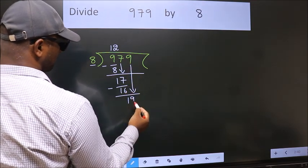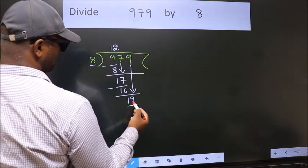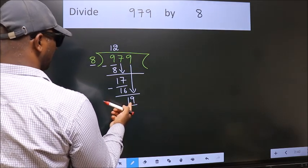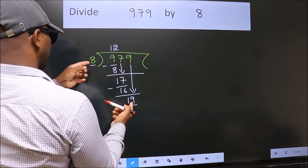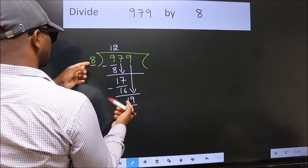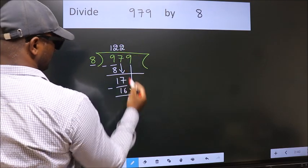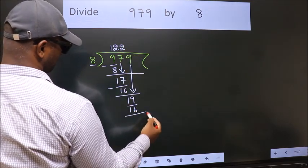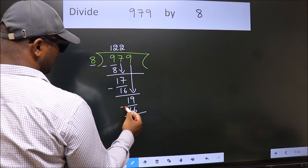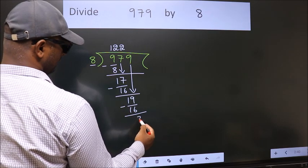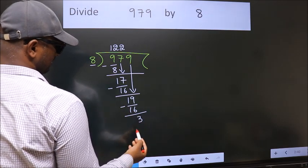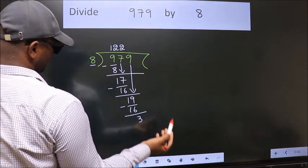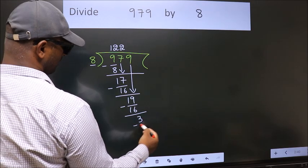So, 9 comes down, giving us 19. A number close to 19 in the 8 times table is 8 twos, which is 16. Now we subtract. We get 3. There are no more numbers to bring down, so we stop here.